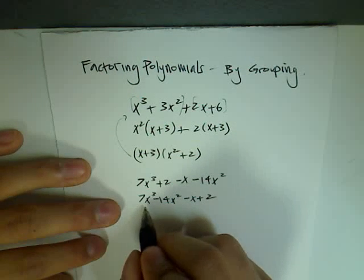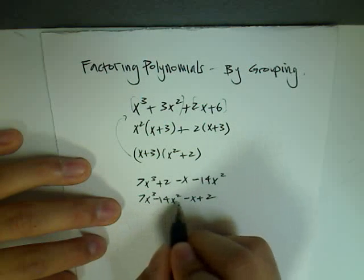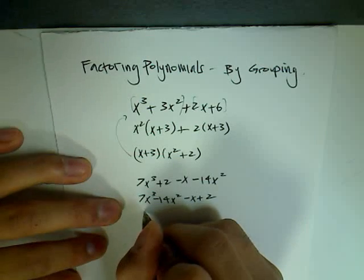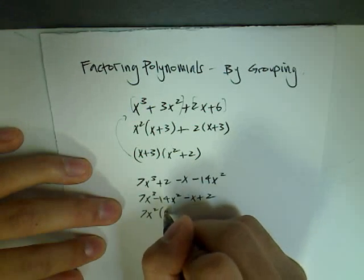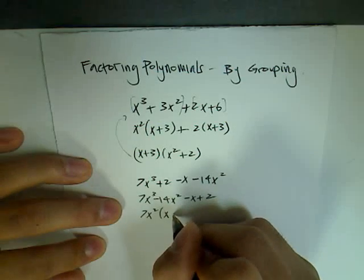So from here, you can see that I'm able to take out a 7x squared from these two terms. So let's go ahead and do that. You have 7x squared times x minus 2.